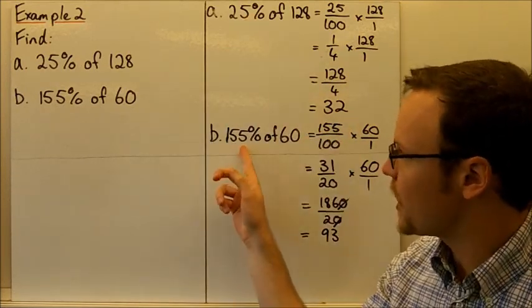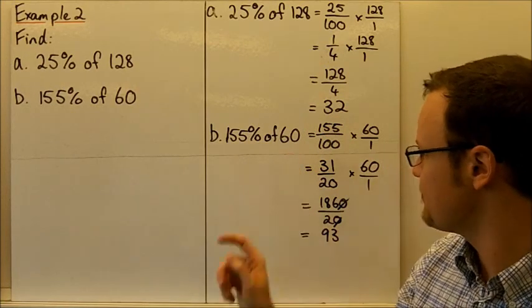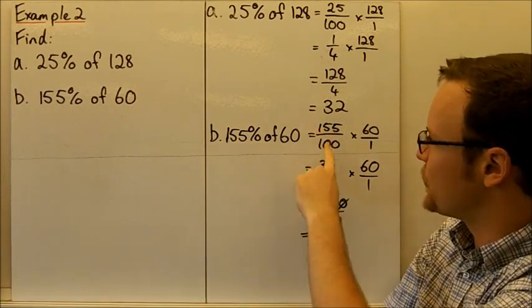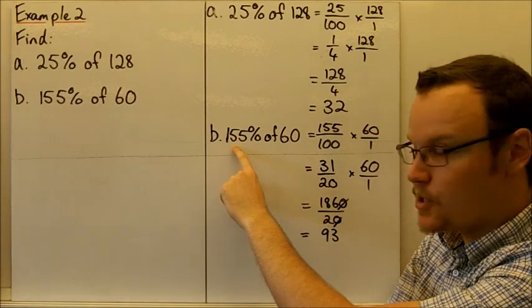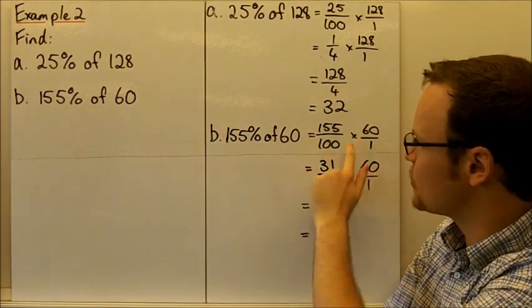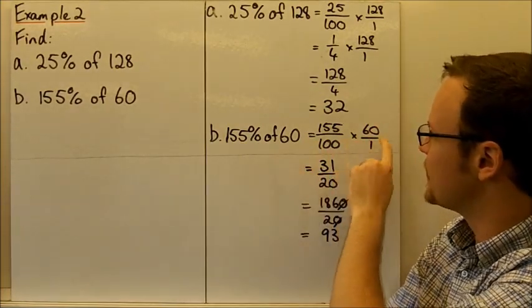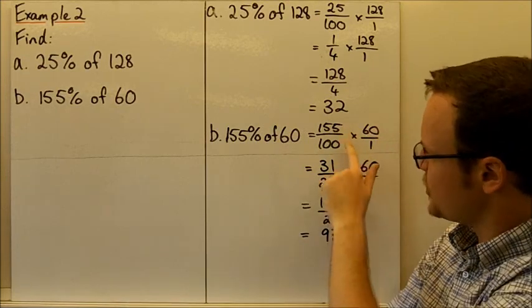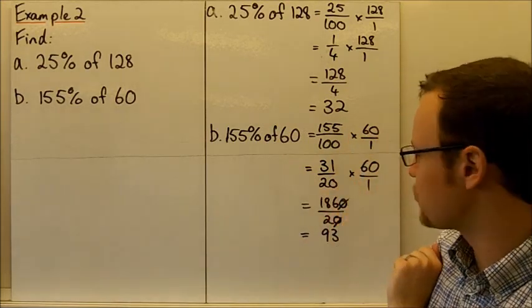If we were going to find 155% of 60, then that's going to be 155 over 100. That's the percentage expressed as a fraction. Multiply by, because we've got 'of' means multiply, 60 over 1. This can be simplified to 31 over 20.